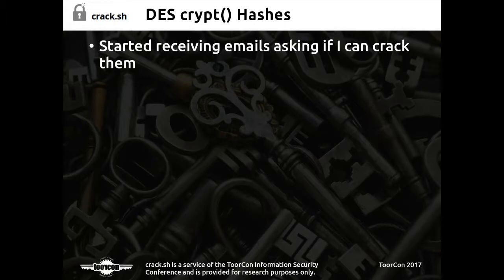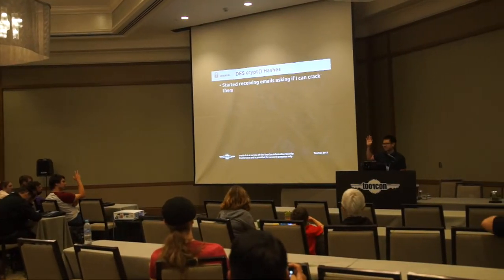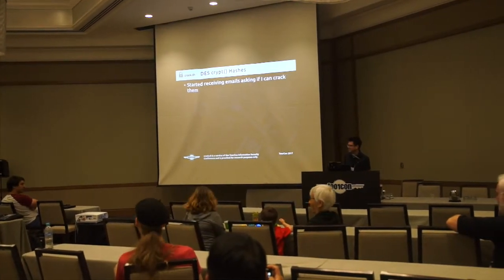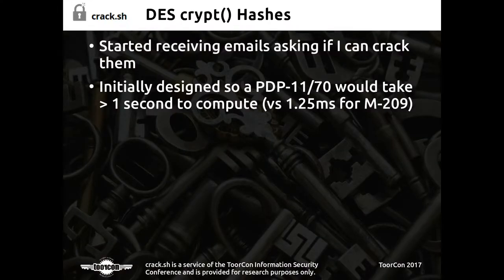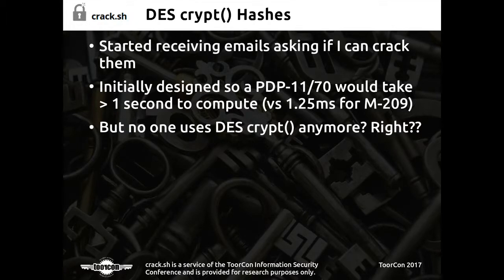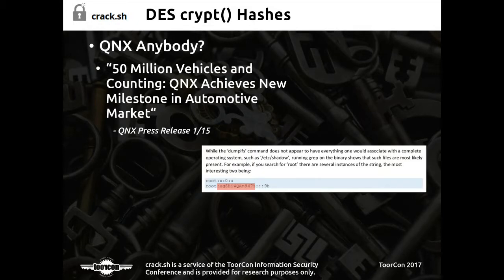I started receiving emails from people asking if I could crack DES crypt hashes from old shadow files and password files — someone found one from a voting machine. This was originally designed to run on a PDP-11 so it would take more than one second to compute, and computers have become a little bit faster since then. Another use case we found: people doing car hacking. A lot of infotainment systems in cars use QNX, which still supports DES.